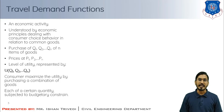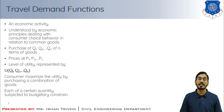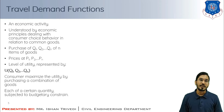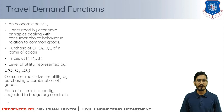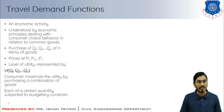Travel demand is an economical activity and it can be understood by reference to the well-known economic principle dealing with the consumer choice behavior in relation to common goods. This travel demand function has been correlated with the consumer choice in terms of price of the product, elaborated by giving the principles of consumer choice behavior in relation to common goods.